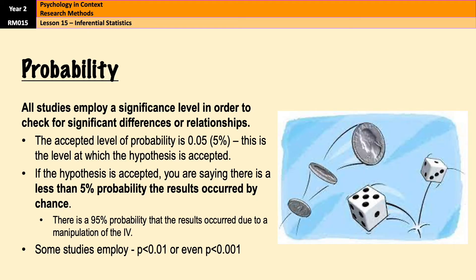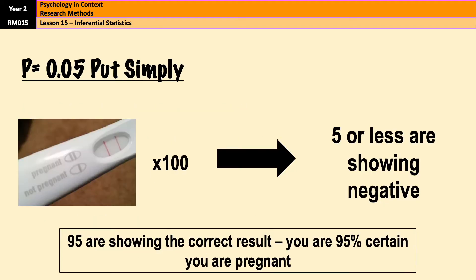Just to put 0.05 into a different example to make it absolutely clear: imagine you're pregnant and you take 100 pregnancy tests. After taking 100 pregnancy tests, five or fewer are showing as negative — meaning 95 of your 100 tests show that you are pregnant. That means you can be 95% certain that you are pregnant, and that 5% is an acceptable margin for error. Everyone is going to say you're pregnant. That is effectively what P equals 0.05 means.